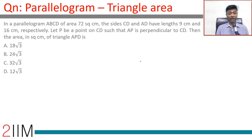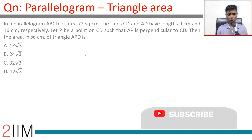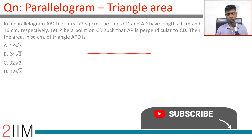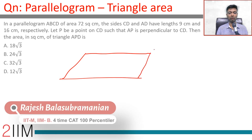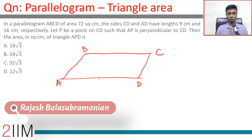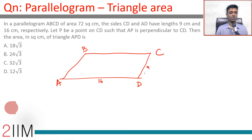In a parallelogram ABCD of area 72 square centimeters, CD and AD have lengths 9 centimeters and 16 centimeters respectively. Since AD is longer, the diagram shows AB=16 and the side CD=9, with area 72 square centimeters.